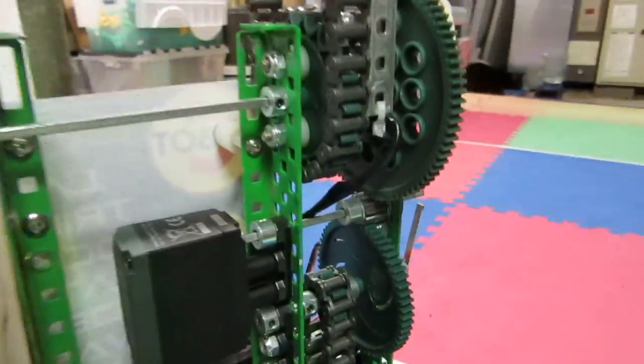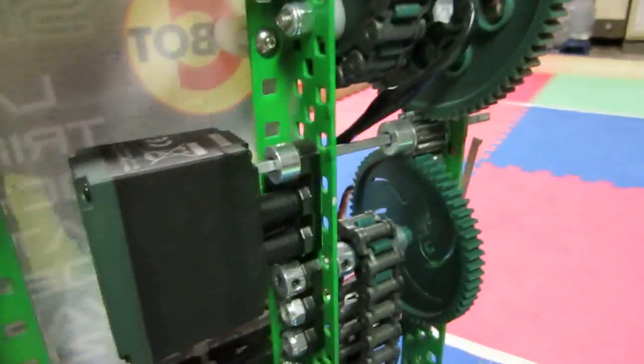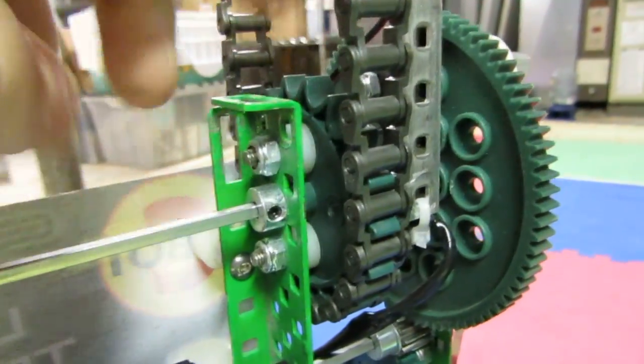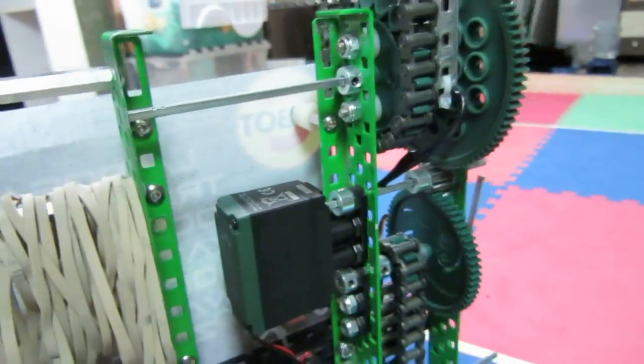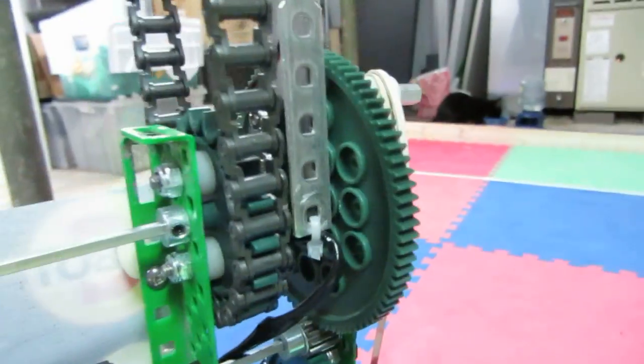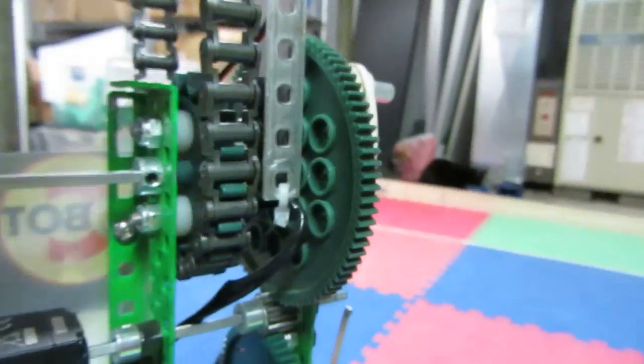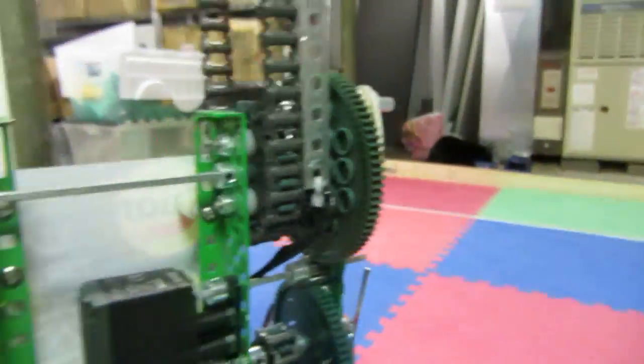So basically, what you do first is you get a sprocket. That's what we have right here. Usually you want to use high strength if you're doing it for the arm, but any size will work. We just had to use a smaller one because we couldn't go any higher on our robot.